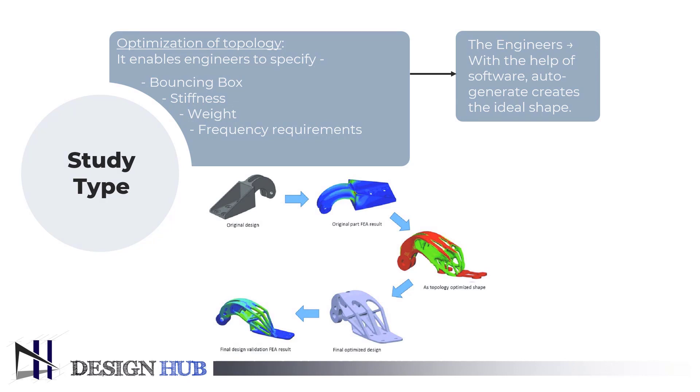Rather than developing a design and validating it, it is an optimization capability that allows the user to find the best distribution of material. With topology optimization, an optimal structure is generated by carving out material from a given design space, allowing for a given amount of material.